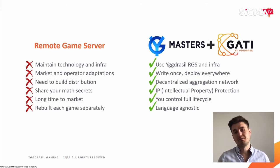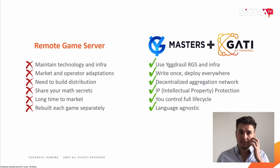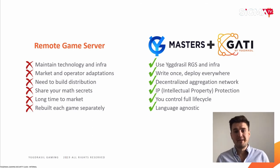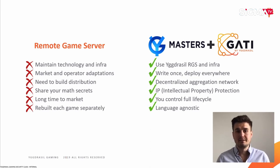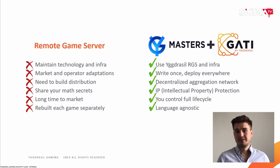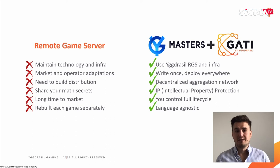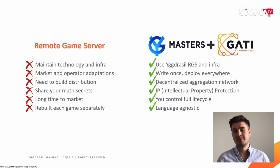GATI lets you develop both game client and game server completely independently, completely by yourself, and plug it into our network. Nothing limits you in terms of technology — it is transparent, it is language agnostic, and we don't see your code, so you can keep your math secrets to yourself. Only you are responsible for timelines and when it's going to be live. You don't need to rely on third parties waiting for their timelines, roadmaps, and delivery.